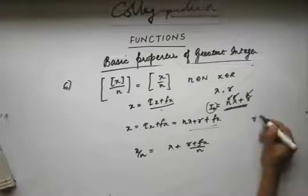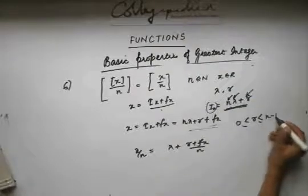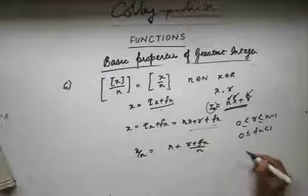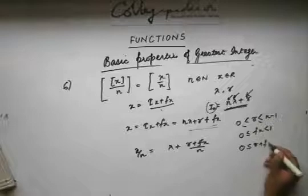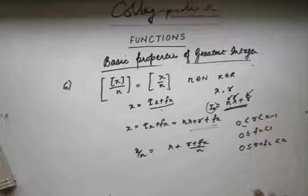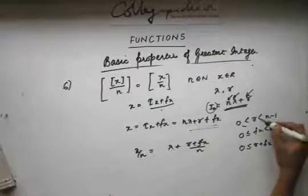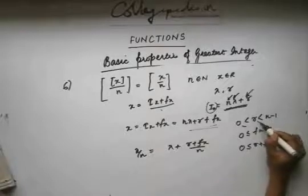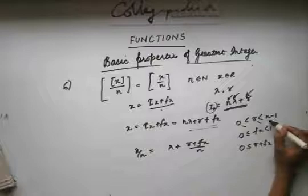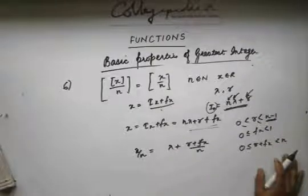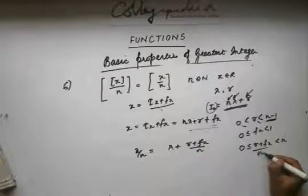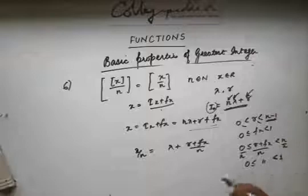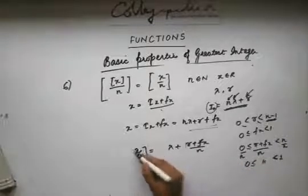Since r is a remainder, r lies between 0 and n minus 1, and fx lies between 0 and 1. So r plus fx lies between 0 and n (with r ≤ n−1, not equal to n). Dividing by n, (r plus fx)/n lies strictly between 0 and 1. Therefore ⌊(r+fx)/n⌋ is 0, and ⌊x/n⌋ equals simply λ.